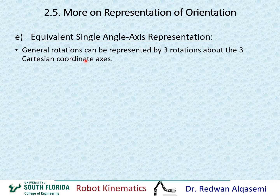In general, rotation matrices are represented by three separate rotations about X, Y, and Z — the three Cartesian coordinate axes. As we saw earlier with Euler axes and fixed axes, we had a general rotation represented by rotating about X, then rotating about Y, and then rotating about Z.